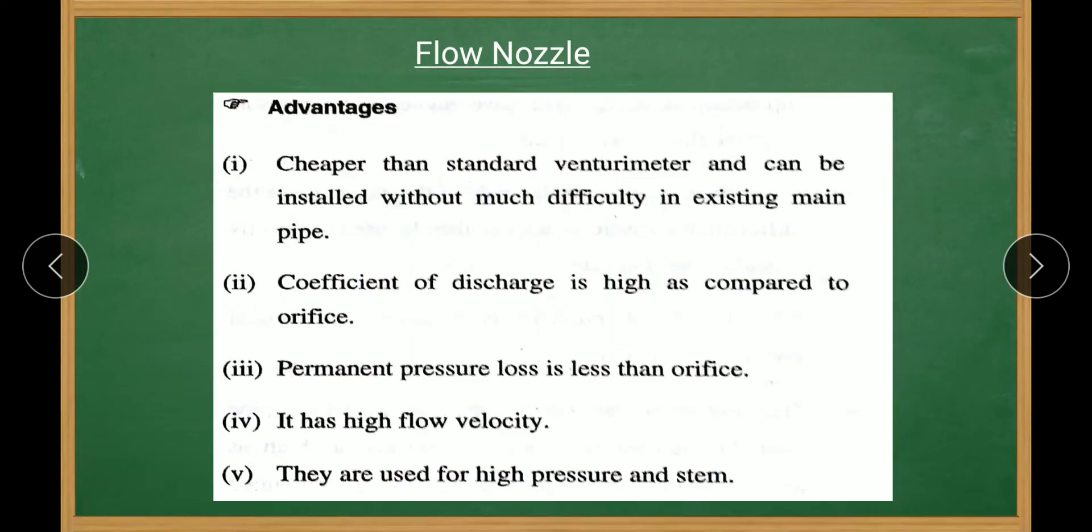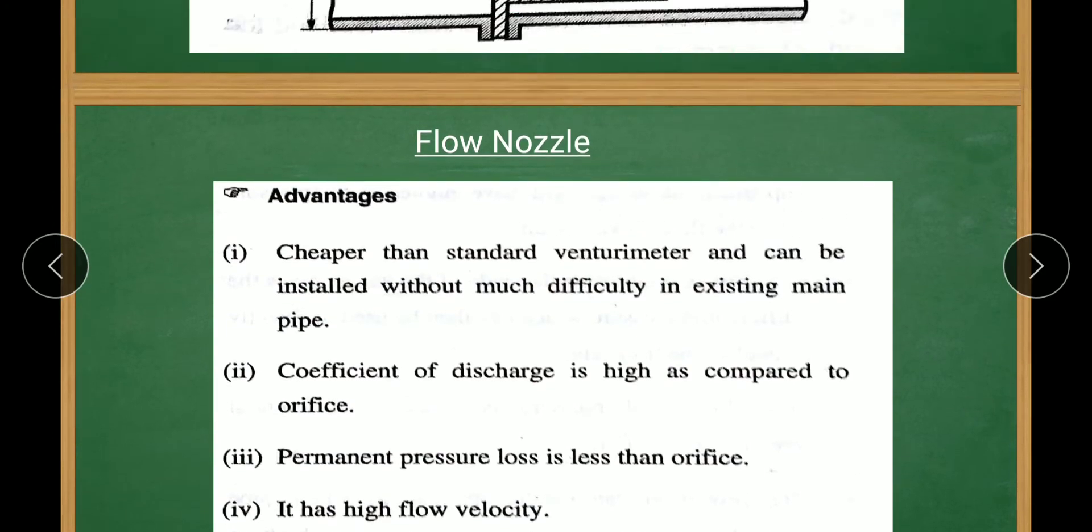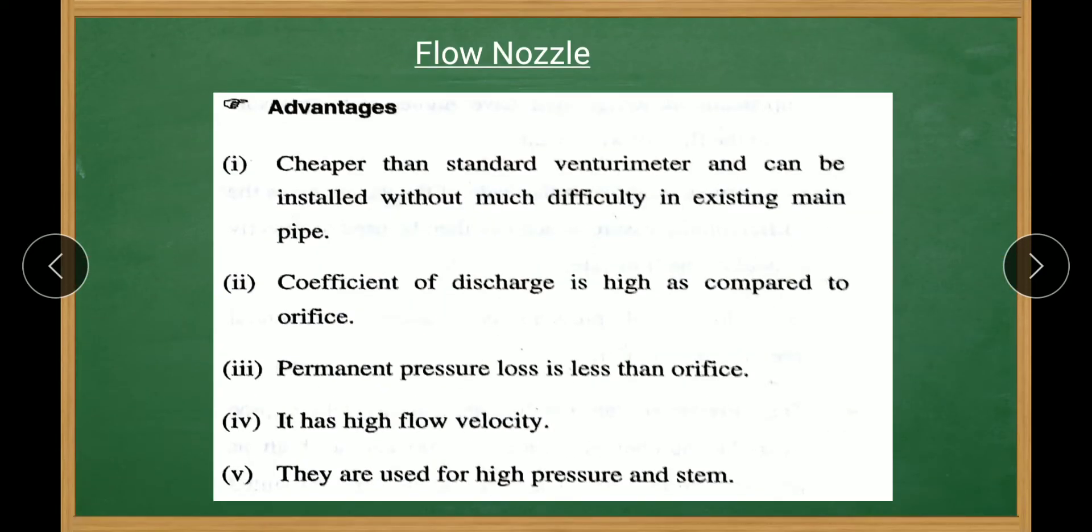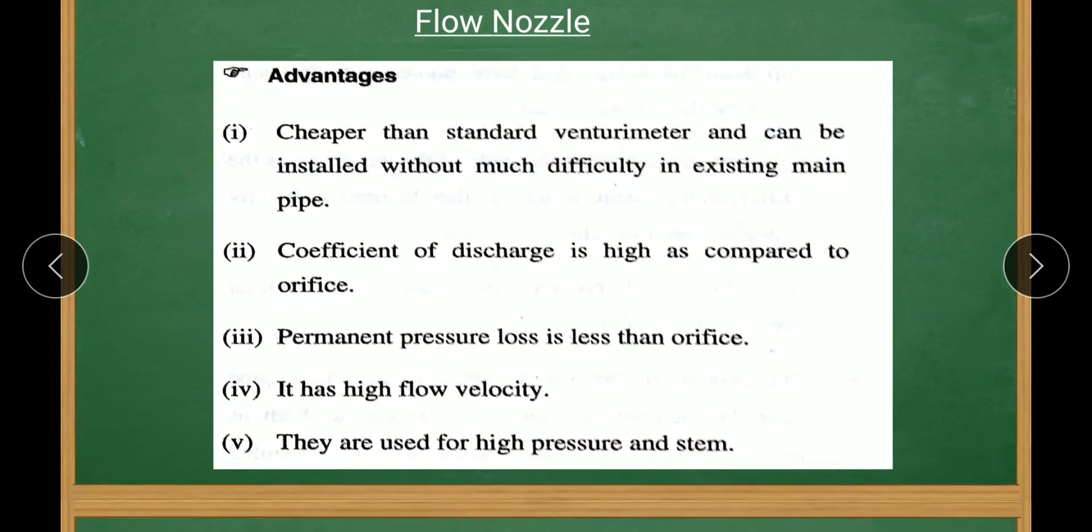The flow nozzle measures pressure difference from inlet and outlet. Advantages: it is cheaper than standard venturimeter and can be installed without much difficulty in existing main pipe. Coefficient of discharge is high as compared to orifice. Permanent pressure loss is less. It has high flow velocity. They are used for high pressure and steam.